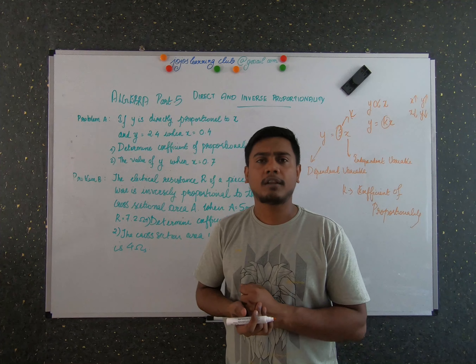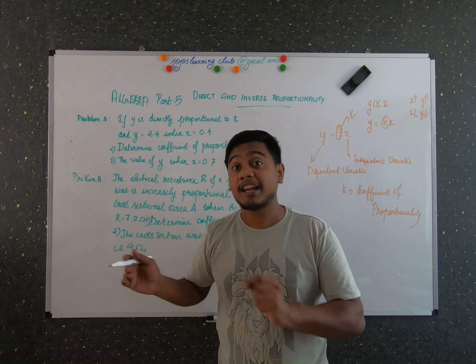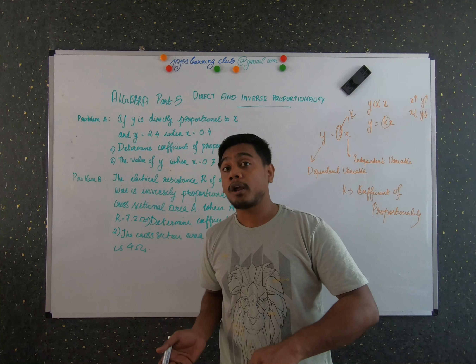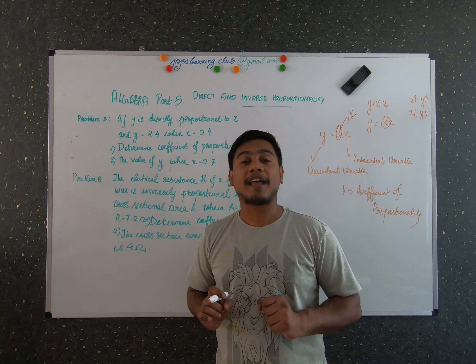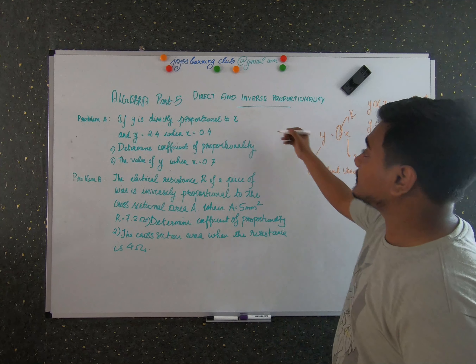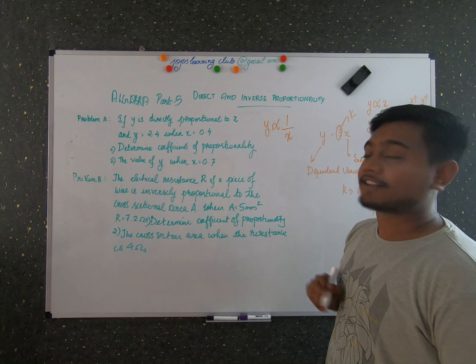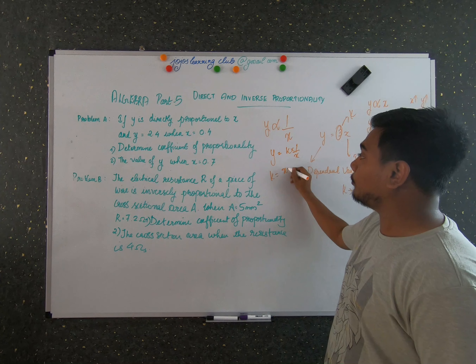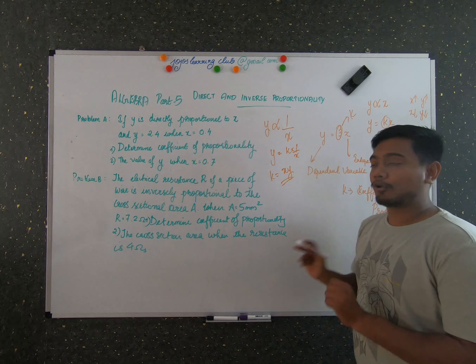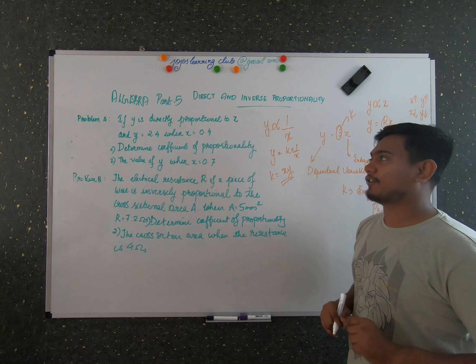Inverse proportion is when an increase in the independent variable leads to a decrease in the dependent variable, or a decrease in the independent variable leads to an increase in the dependent variable — this is known as inverse proportion. For an inverse proportion, you can write y is equal to k times 1 by x, so k is equal to x times y. That is all about direct and inverse proportion. It's really easy, and now let's do two more problems for a better understanding.